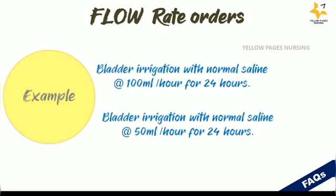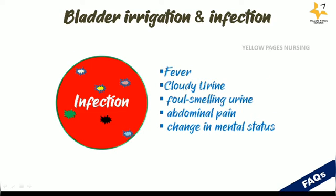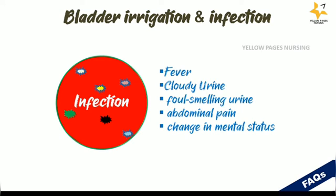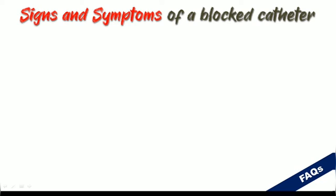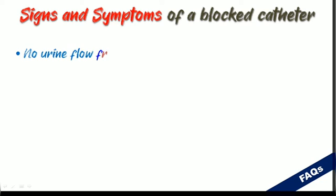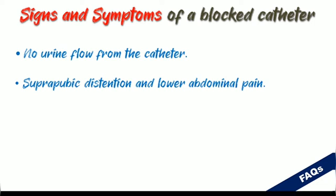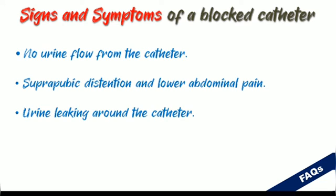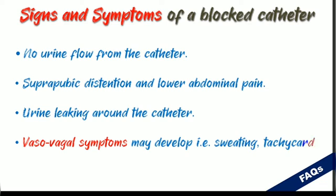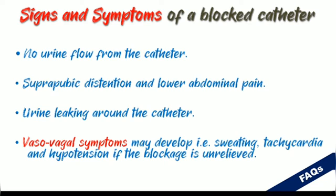Regarding bladder irrigation and infection: if infection is present, it is indicated by fever, cloudy urine, foul-smelling urine, abdominal pain, and changing mental status. Signs and symptoms of a blocked catheter may include no urine flow from the catheter, suprapubic distension, lower abdominal pain, urine leaking around the catheter, and vasovagal symptoms such as sweating, tachycardia, and hypotension if the blockage is unrelieved.